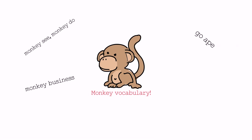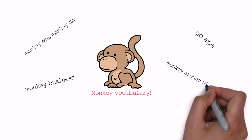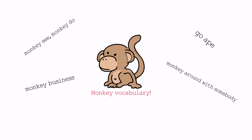The next one: 'go ape' means to go crazy, to get really angry. For example, 'He went ape when I stole his pencil.' And last of all, 'monkey around with somebody' — that means to have fun with them, trick them, and generally be like a monkey with somebody.